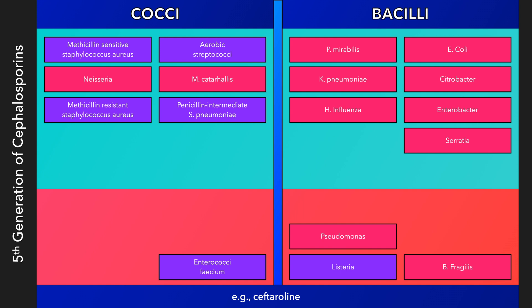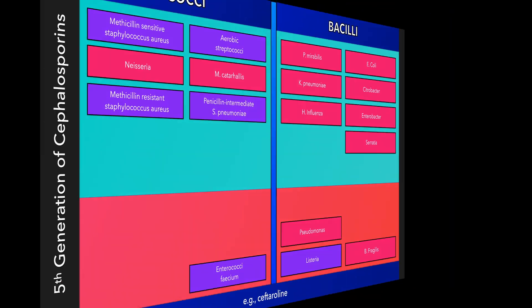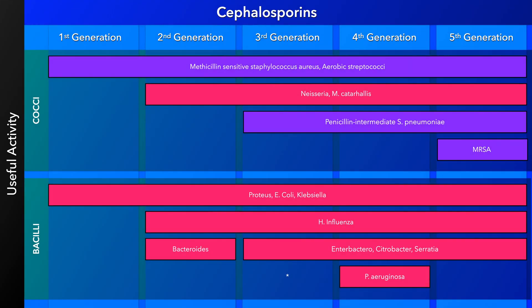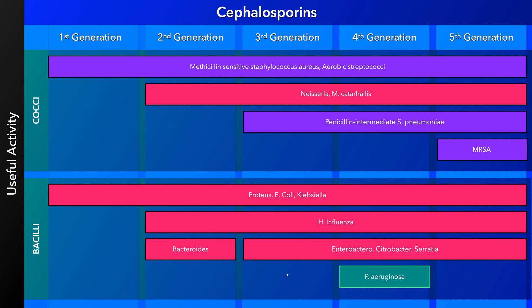Now that we've covered the five generations of cephalosporins, let's go to the flashcard mentioned near the start of this lecture. This flashcard basically summarizes the spectrum of antibacterial activity described in the preceding slides. At a glance, you can see that the cephalosporins do not cover gram-positive rods such as listeria, nor the gram-positive enterococci. Characteristic features of individual generations include Bacteroides coverage by a subgroup of second-generation cephalosporins, pseudomonas coverage by fourth-generation cephalosporins such as cefepime, and MRSA coverage by fifth-generation cephalosporins.